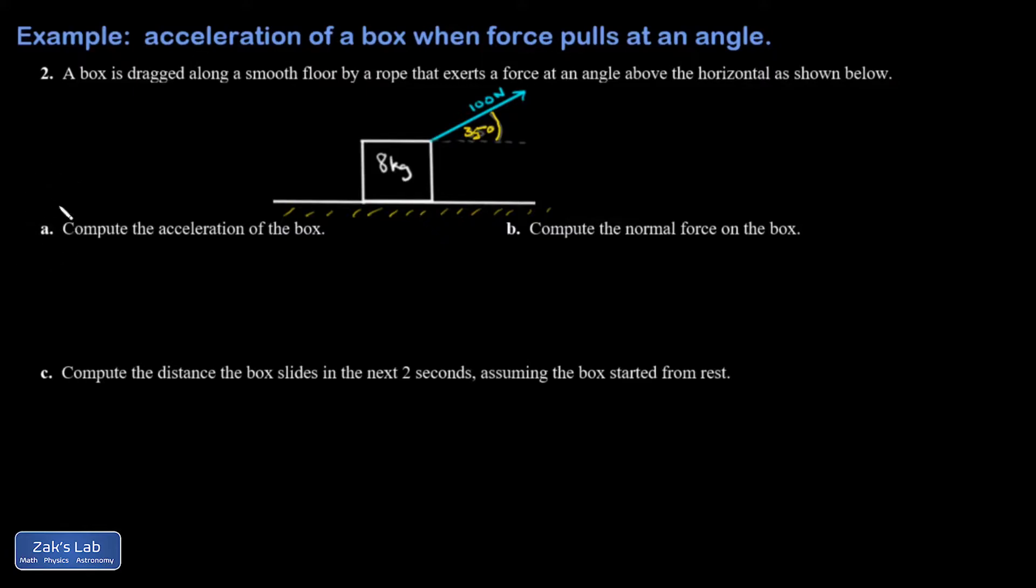Question A can be done before we even get into really doing a complete force diagram for this object. It is going to be important to break that applied force into components. So this one is 100 cosine 35, and I'll say it's approximately equal to 81.9 newtons.